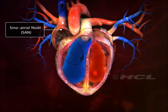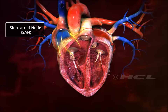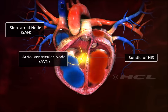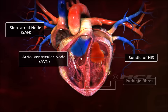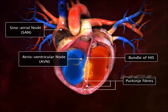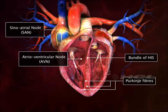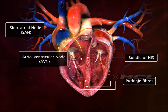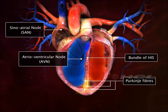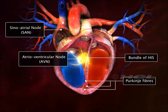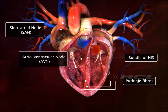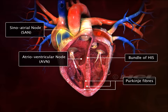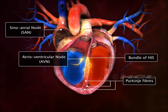The sinoatrial node, atrioventricular node, bundle of His, and Purkinje fibers represent the specialized cardiac tissue. These fibers are auto-excitable, as they have the potential to generate electrical activity without any external stimuli. This makes the heart beat continuously.